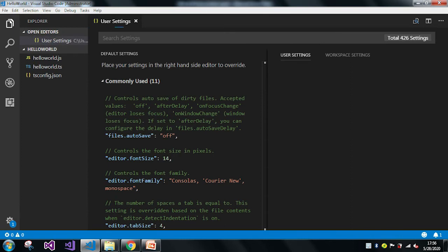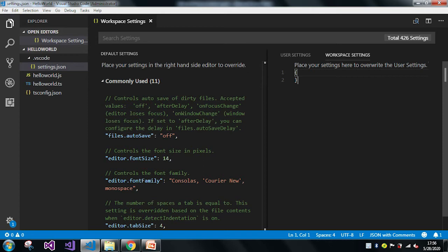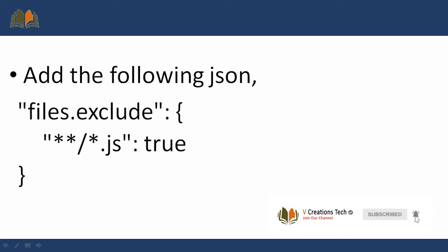This is our user settings, and here you can see the workspace settings — just click on it. Here we need to add a JSON setting: files.exclude, specifying which files we are excluding — the .js files — with the value set to true. By adding these three lines of code, it will exclude those JS files from our explorer.